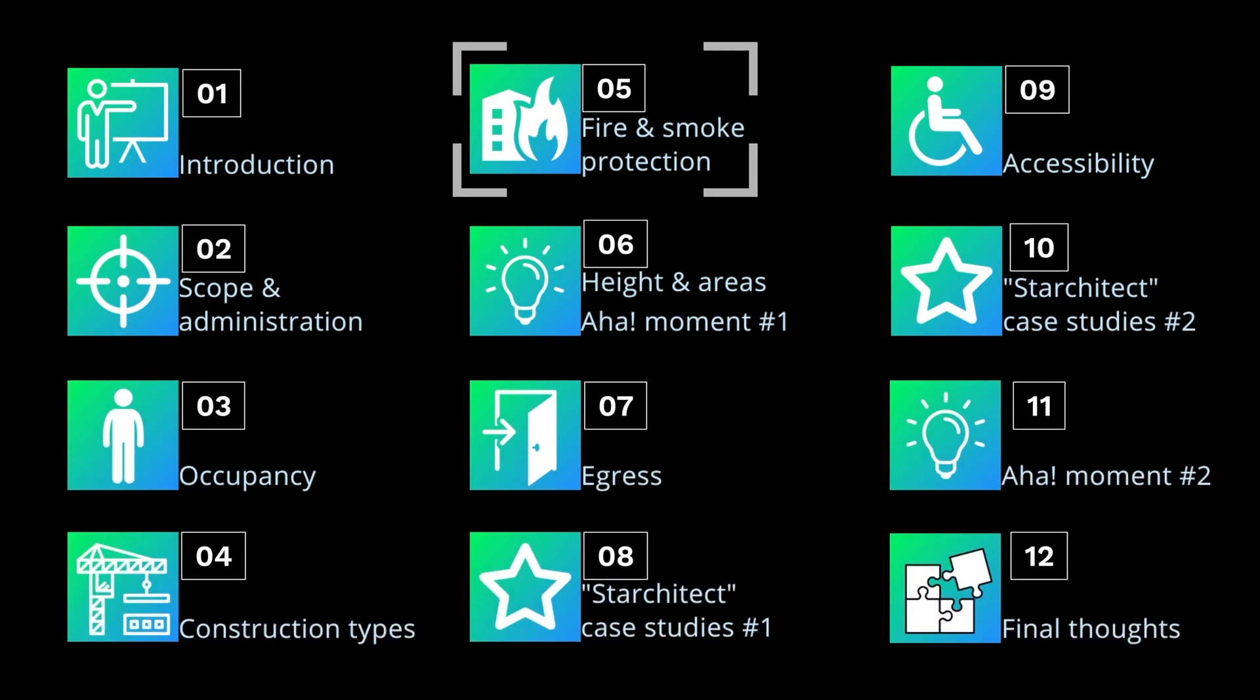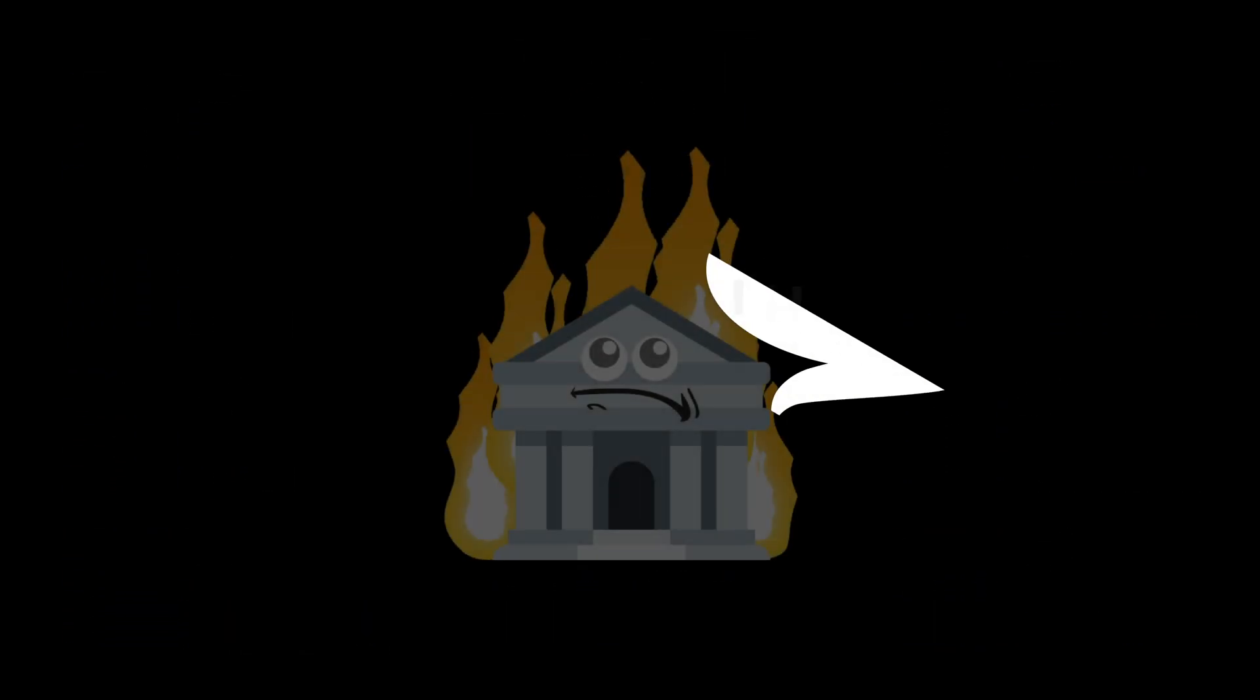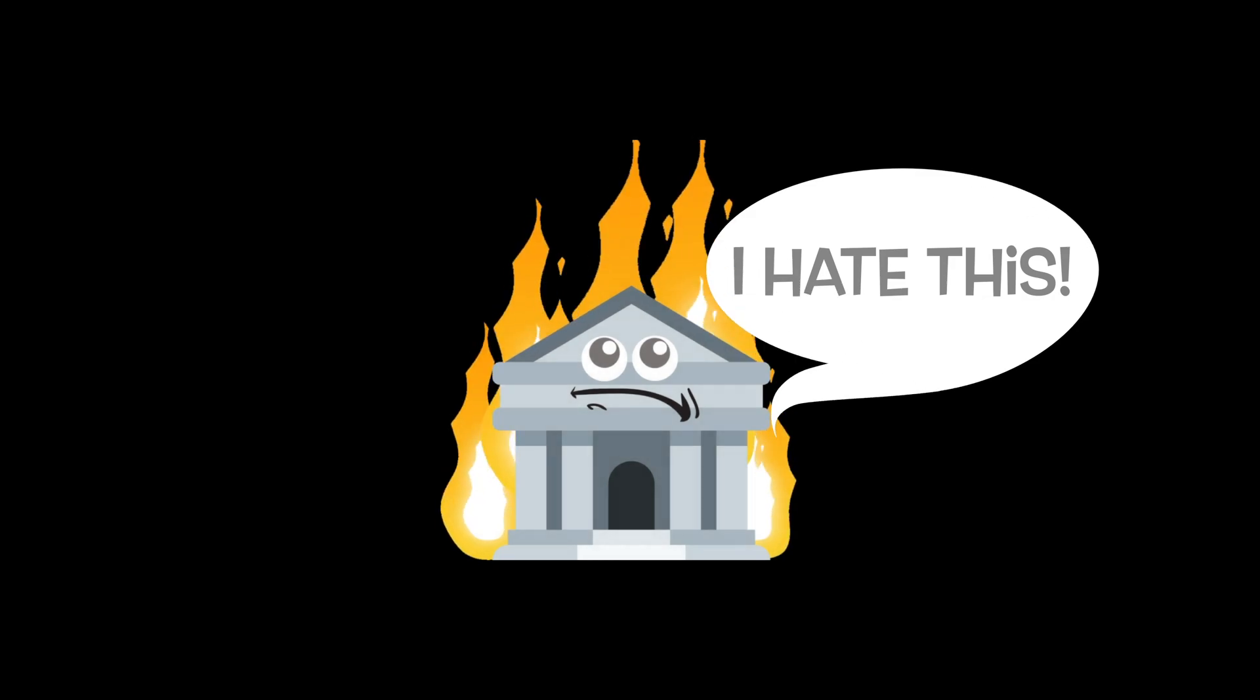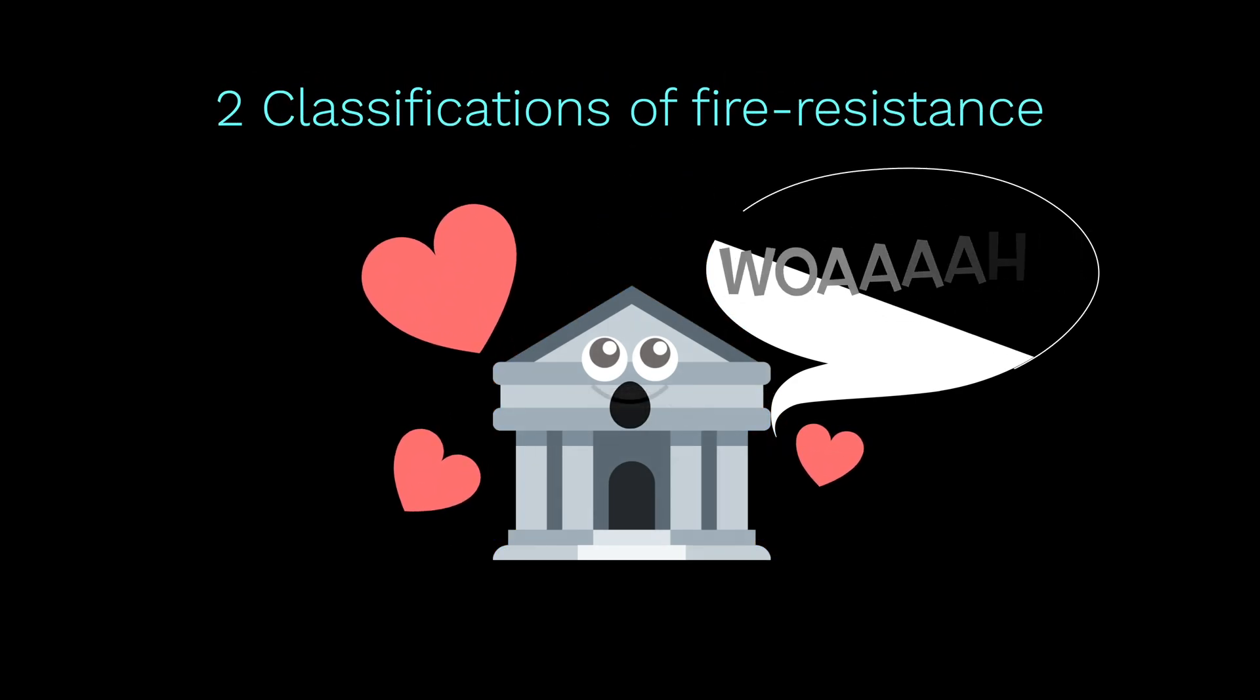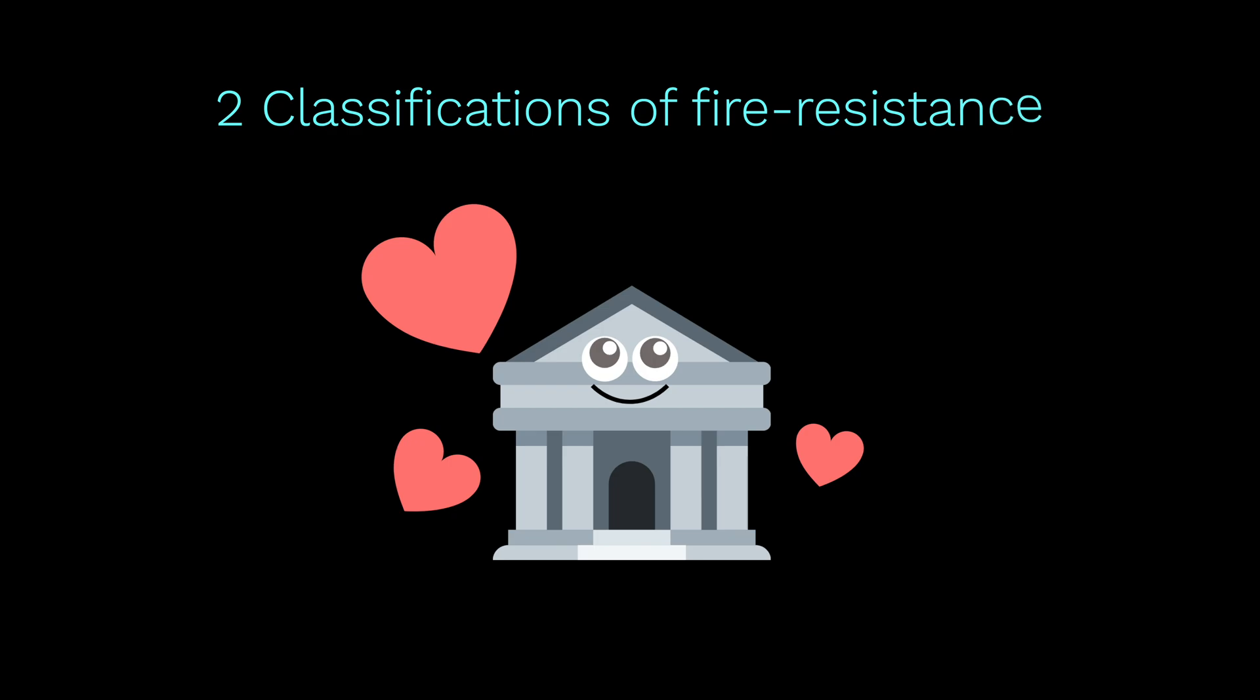Let's talk about fire and smoke protection. Architects cannot design fireproof buildings, but they can create buildings with the ability to resist fire. There are two classifications of fire resistance.